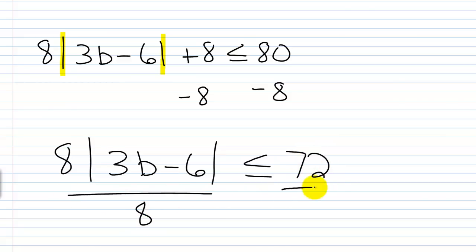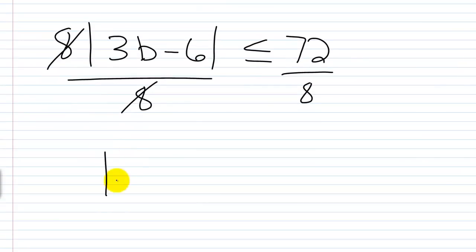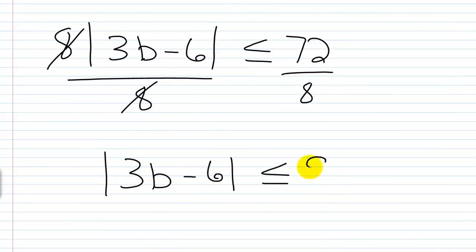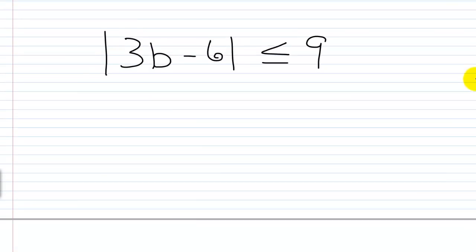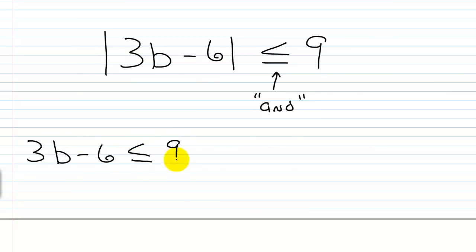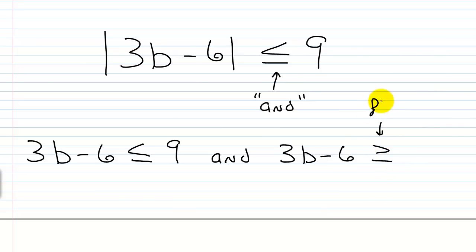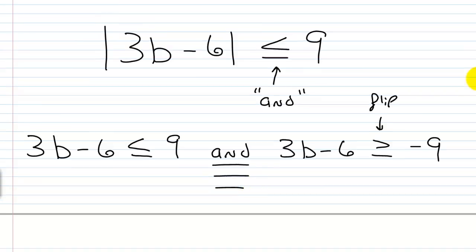I'll divide each side by 8. This will cancel, and I'll have the absolute value of 3v minus 6 is less than or equal to 9. Now we have the absolute value operation on one side and a number on the other. This is a less than or equal to, so this means we're setting up a compound inequality with 'and.' The first scenario is to remove the absolute value bars and write what's there: 3v minus 6 is less than or equal to 9. The second scenario is to remove the bars, flip the sign, and make the number negative: 3v minus 6 is greater than or equal to negative 9. It has to satisfy both — it's the intersection.